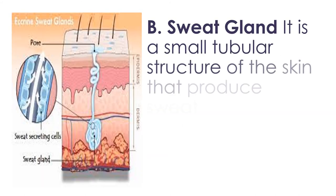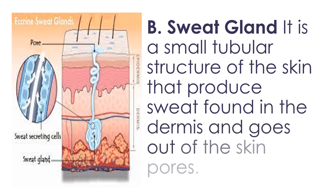Sweat glands are small tubular structures of the skin that produce sweat. They are found in the dermis and their secretions go out through the skin pores. The pores are the small openings visible in the skin through which sweat is released.